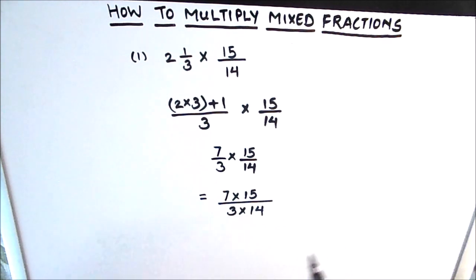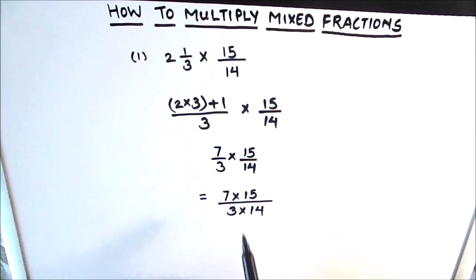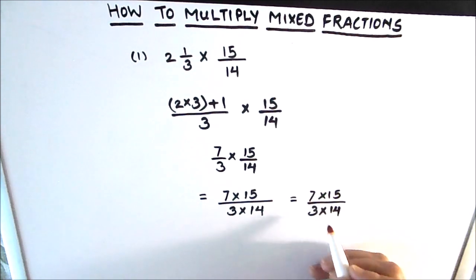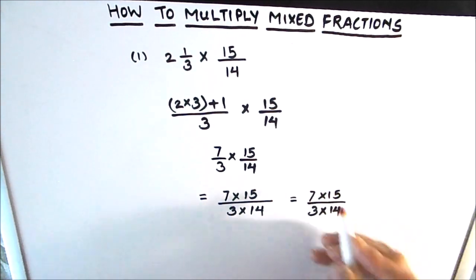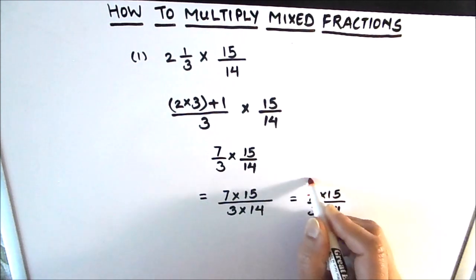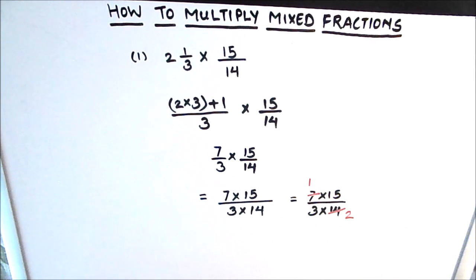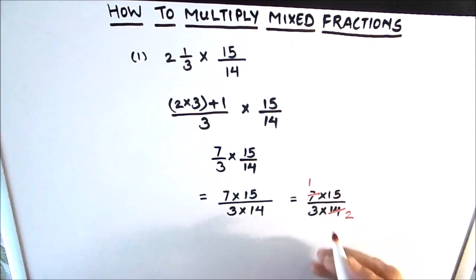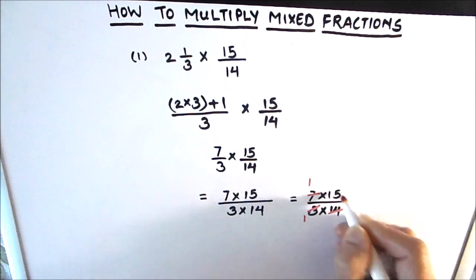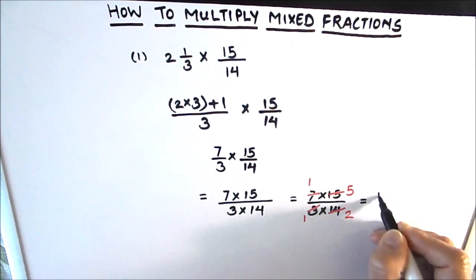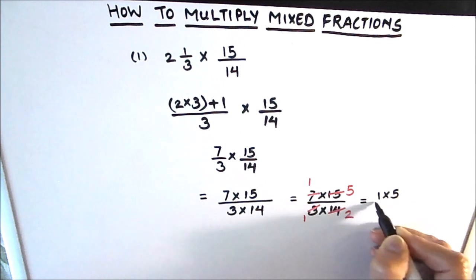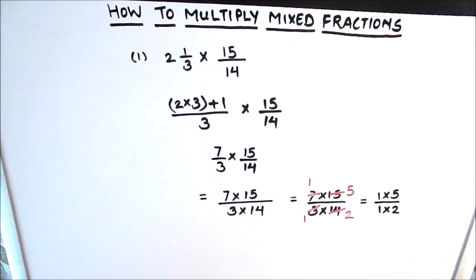Before multiplying the two numbers and writing the answer, we first check whether the expression can be simplified. We look for common factors in the numerator and denominator. There is a common factor of 7: 7 times 1 is 7 and 7 times 2 is 14. Another common factor is 3: 3 times 1 is 3 and 3 times 5 is 15. Now we have 1 times 5 in the numerator and 1 times 2 in the denominator.